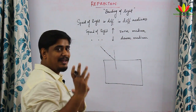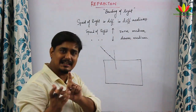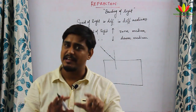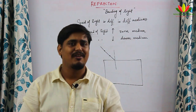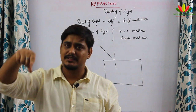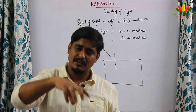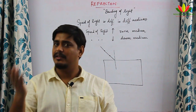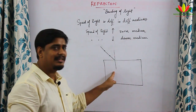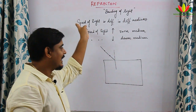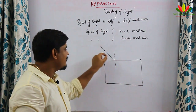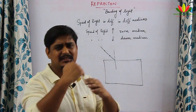We place the glass slab back on the paper. To recap: on a white paper we kept a glass slab, marked its boundaries, removed the slab, drew a perpendicular line on that boundary, made a line passing through this point, and kept two pins at some distance apart on that line.